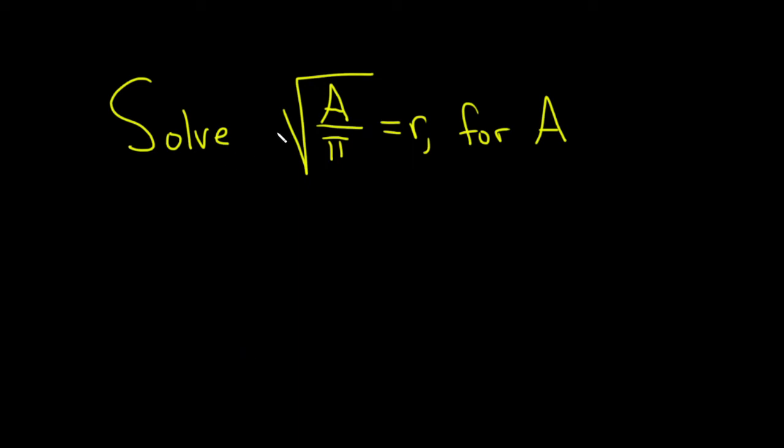In this problem we have to solve this equation: the square root of A over π equals r, and we have to solve for the variable A.